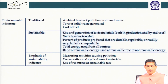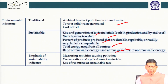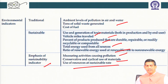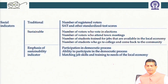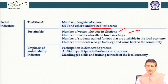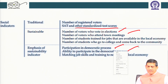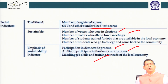Environmental indicators include pollution levels, use of less toxic materials, vehicle miles traveled, recyclability, compostability, total energy used, ratio of renewable energy, activities causing pollution, conservation, cyclic use of materials, and circular economy concepts. Social indicators include number of registered voters, standardized test scores, people's involvement in education, voter participation, attendance at meetings, day-to-day involvement in decision making, number of students going to school and college, participation in democratic processes, and matching job skills with local economic needs.